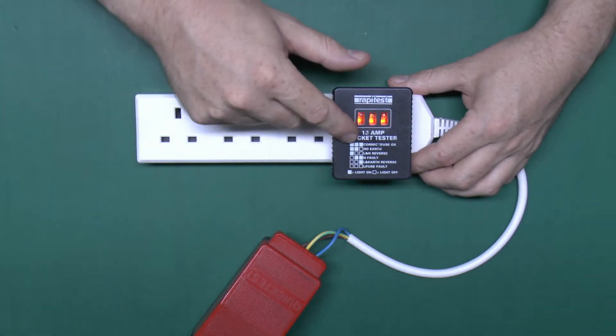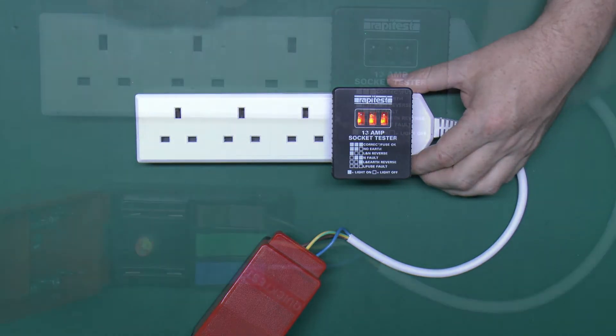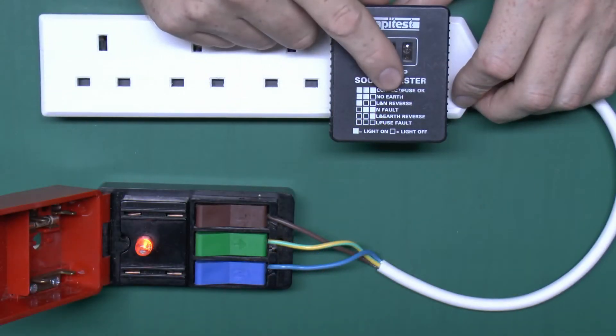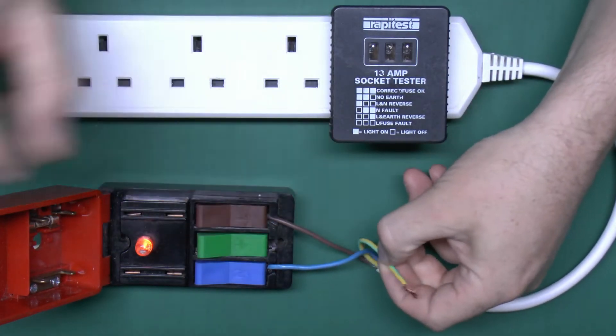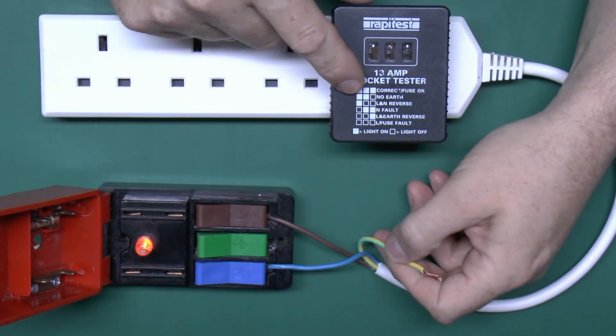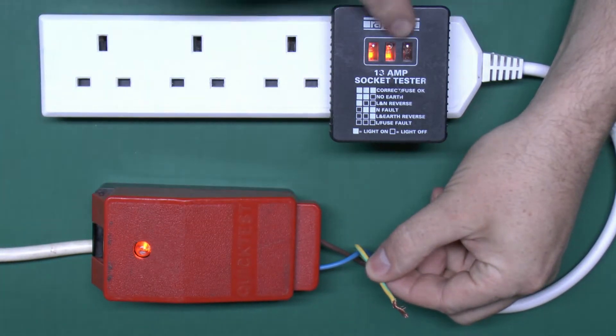So let's try some of the other combinations starting with the options that it has printed on the front of the device. First of all on the list here is no earth, so that's easily achieved by removing the earth, and we should get two lights only. Sure enough we do.